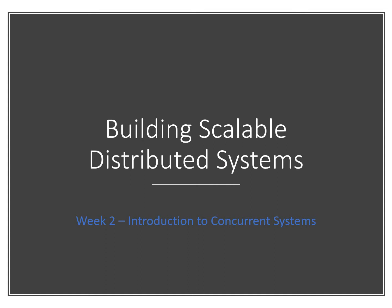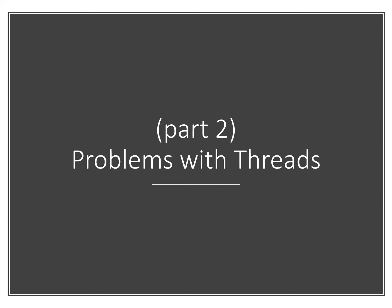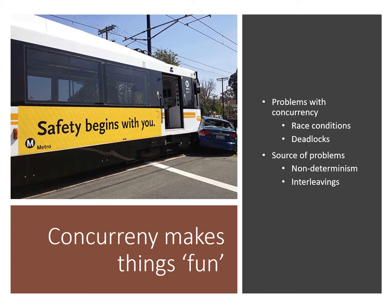Let's continue with week two and start delving into some of the problems with threads that we encounter because of this non-deterministic behaviour and the fact that they can share objects and the state of different objects across multiple threads. The problems we get specifically are race conditions and deadlocks. We'll talk about race conditions in this section and deadlocks in the next one. The source of these problems is non-deterministic behaviours and random interleavings of statements, which can make your code unsafe.